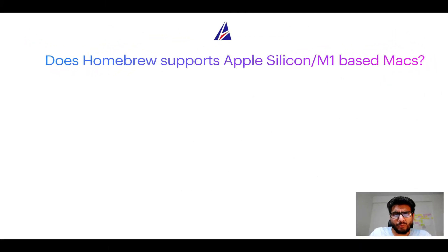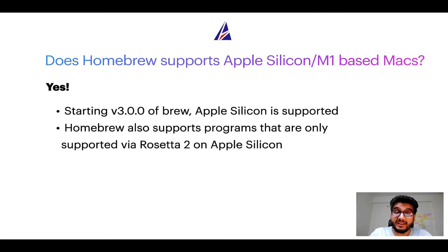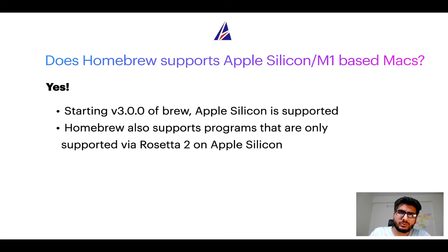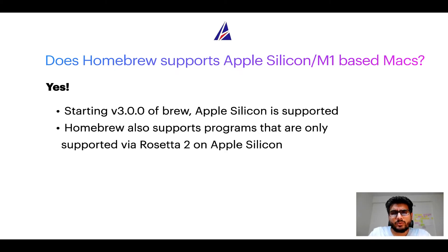Next question: can you use Homebrew to install programs on Apple Silicon, more popularly known as M1 MacBooks? Again, yes. Starting version 3.0 of brew, Apple Silicon is now supported on Homebrew. In fact, Homebrew also supports programs that are at the moment only supported via Rosetta 2 on Apple Silicon. Now that I have answered your questions on safety and compatibility of Homebrew, let's get to the installation process.